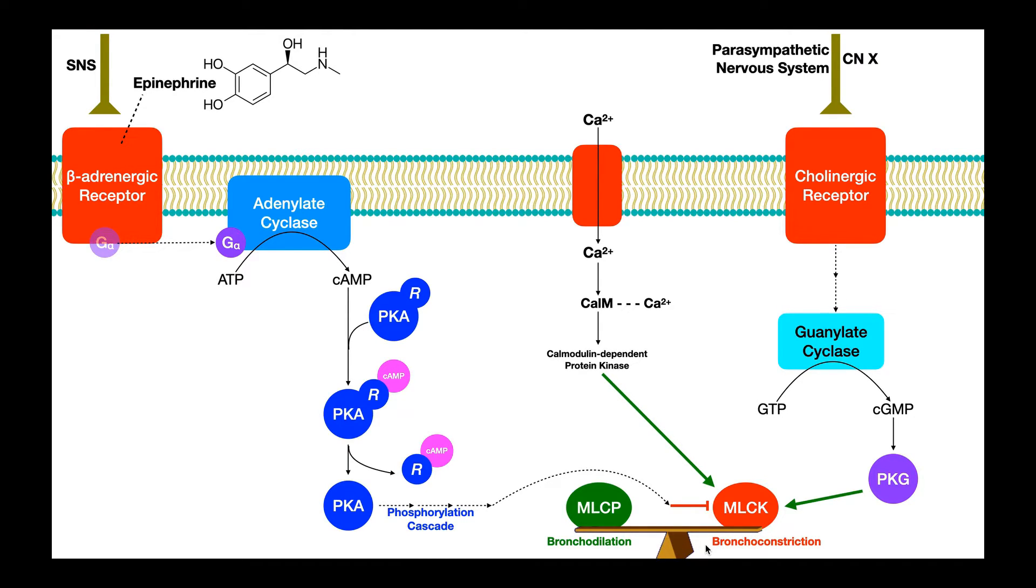There's three main pathways we're going to talk about in this video. That's the adrenergic pathway, the calcium-dependent pathway, and the cholinergic pathway, which is part of the parasympathetic nervous system. And in general, all three of these pathways are going to have some effect on this myosin light chain kinase enzyme. We'll come back to that in just a second.